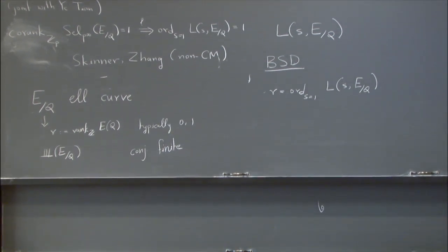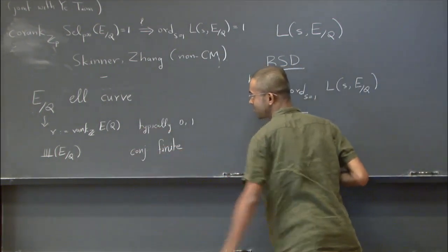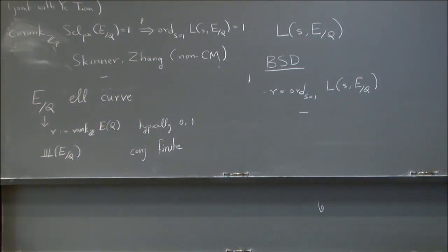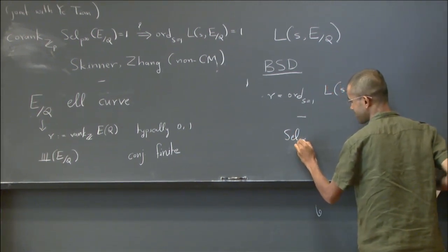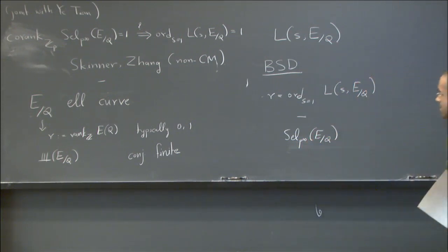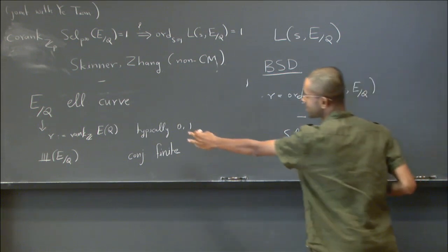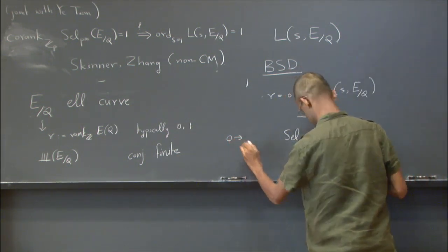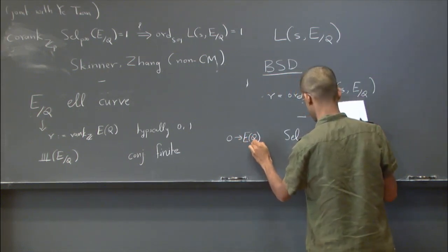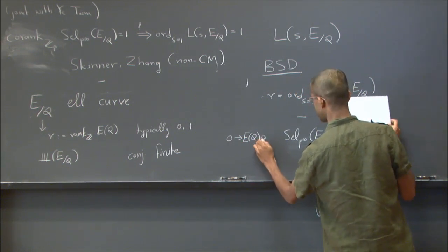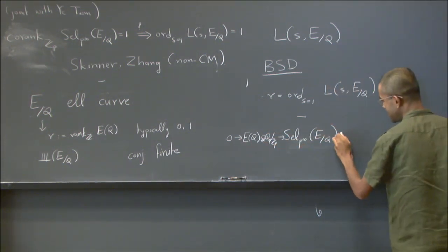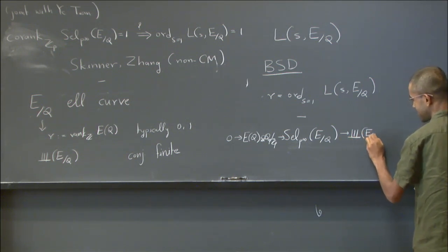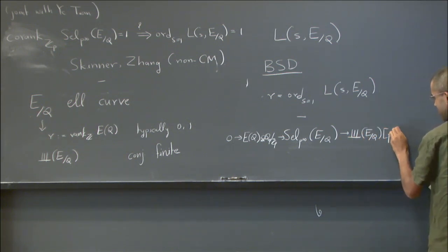And it says something more like formula for the leading term in terms of Tate-Shafarevich group. Okay, so these are maybe two basic invariants, and so they are somehow together encoded in Selmer group. So let's just say that there is this sort of Selmer group which encodes both invariants in the following way. So there is an exact sequence. So E Q rational points tensor with Q_p mod Z_p, and then the p infinity part of the Tate-Shafarevich group.